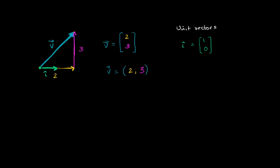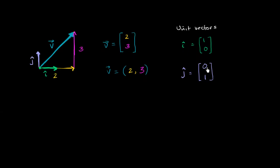Then we can define another unit vector — typically called j — which would go only in the vertical direction and not in the horizontal direction, going one unit in the vertical direction. So i went one unit in the horizontal, and j is going to go one unit in the vertical. Now, any two-dimensional vector we can represent as a sum of scaled-up versions of i and j.